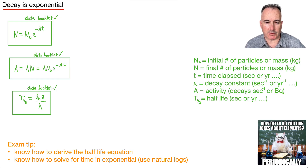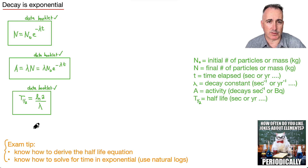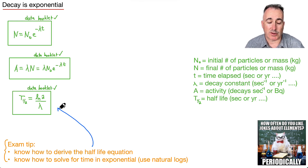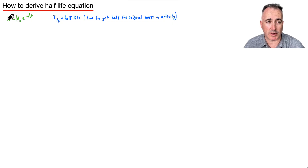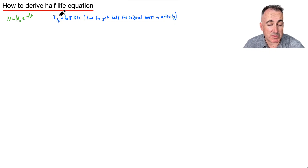A good exam tip: you need to know how to derive the half-life equation, and also make sure you know how to solve for time t in the exponential — in other words, how to algebraically isolate t. Let's learn how to derive the half-life equation. We'll start with N equals N₀ e to the minus lambda t, and use the definition that the half-life is the time to get half the original mass or activity.